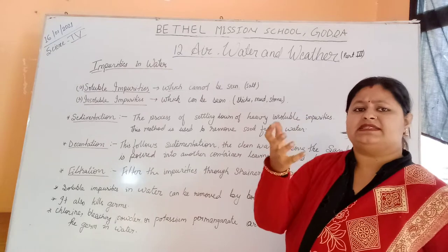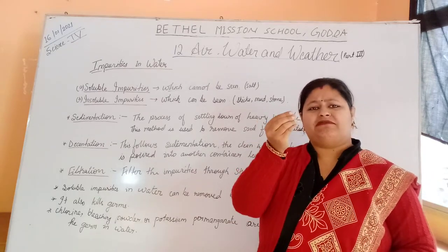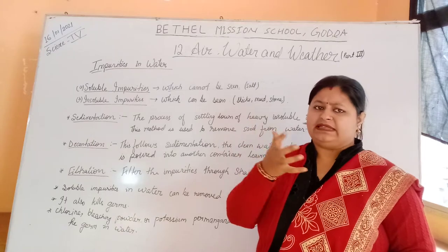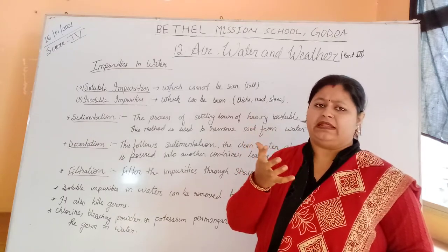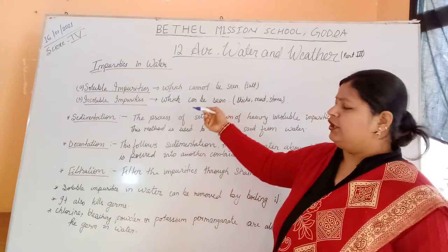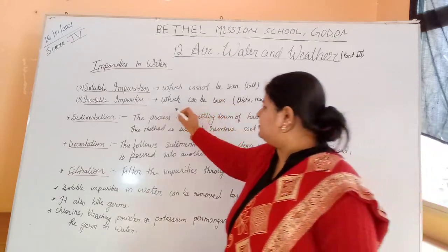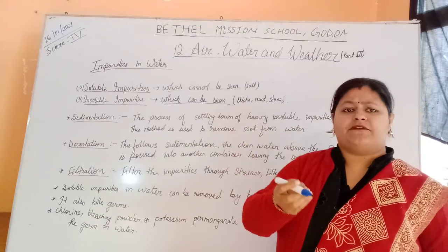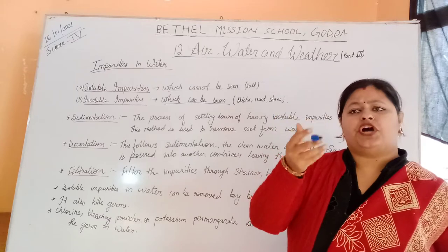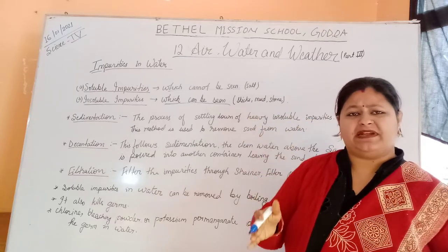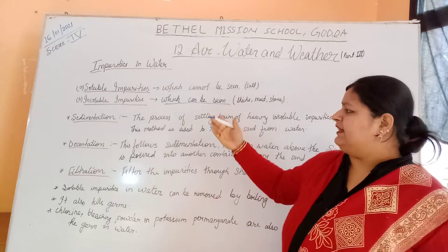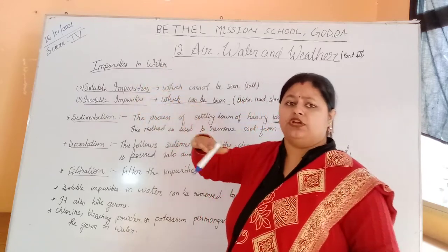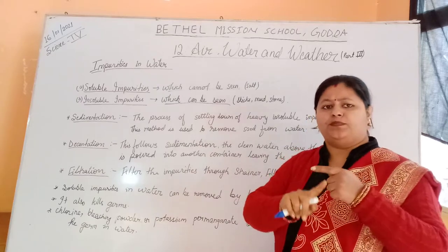Soluble impurities cannot be seen — the particles are not visible to us. Insoluble impurities are those that are not soluble and can be seen. For example, if you take water from a dirty pond, you will find fungus, algae, mud, stones, and pieces of straw. These impure things can be seen floating in the water. Insoluble impurities include straw, mud, stones, pieces of cloth, detergent bubbles, chocolate wrappers, and domestic waste. These are insoluble in water and we can see them.